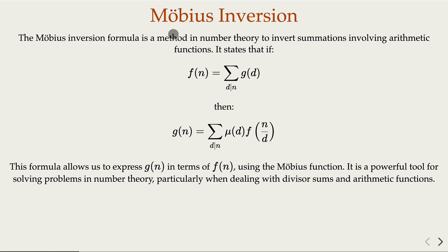There's a very famous and useful result in elementary number theory: the Möbius inversion formula. If G(n) is the sum of F(d) over divisors, you can reverse it — G(n) equals the sum over divisors of μ(d) times F(n/d). Using that, we can solve the problem easily. We'll introduce two methods: one using this powerful tool, and one without it. The more interesting part is solving it without prior knowledge.